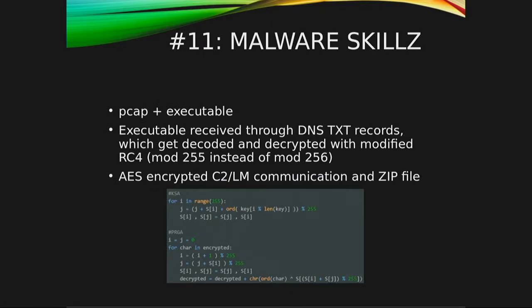For the eleventh challenge, we were given a packet capture and an executable. This executable was doing DNS tunneling, and it was using some modified ARC4 decoding. You had to reverse all this, and then figure out that it was also using AES encryption for the command and control communication, lateral movement, and also for decrypting a zip file.